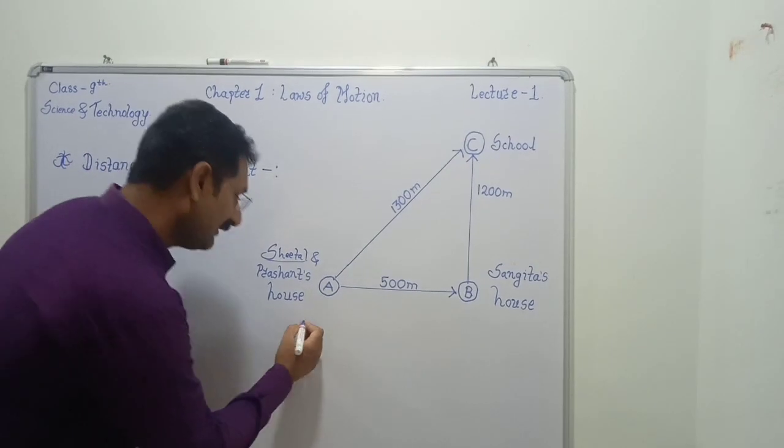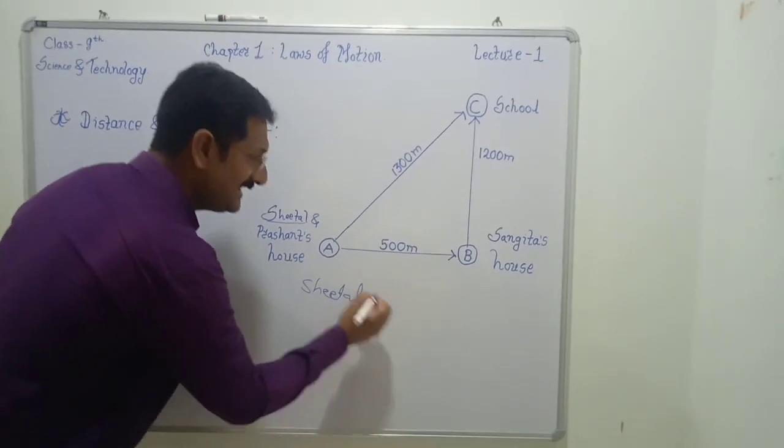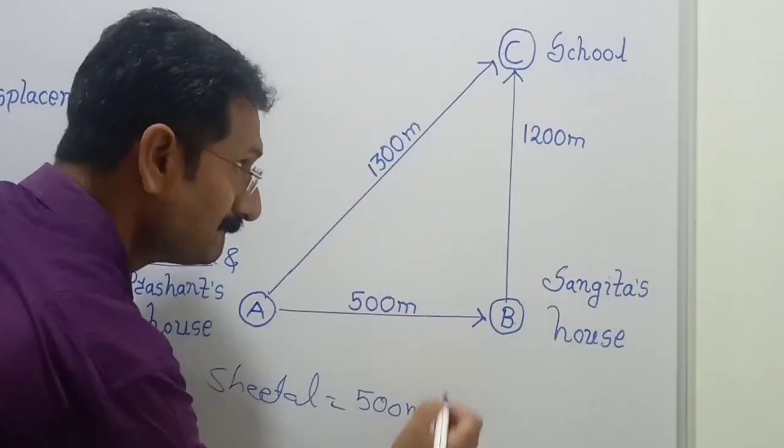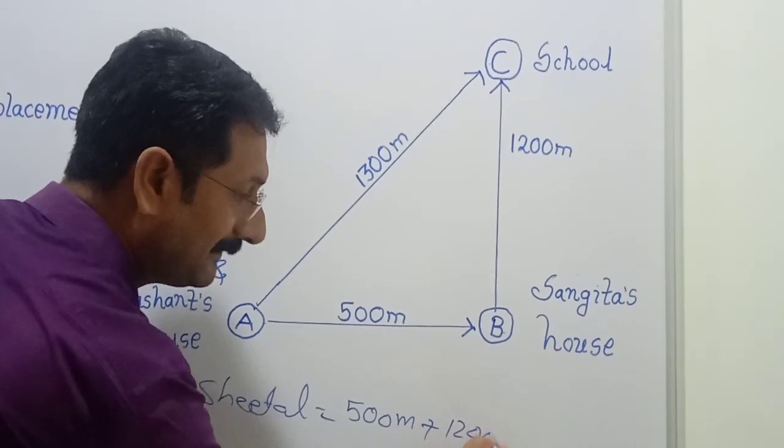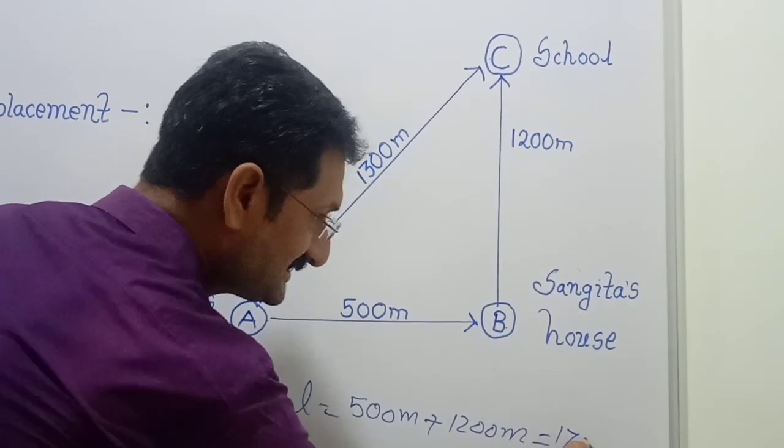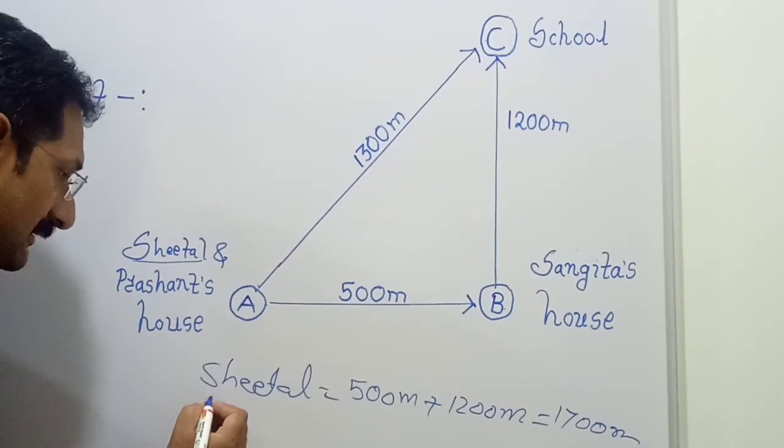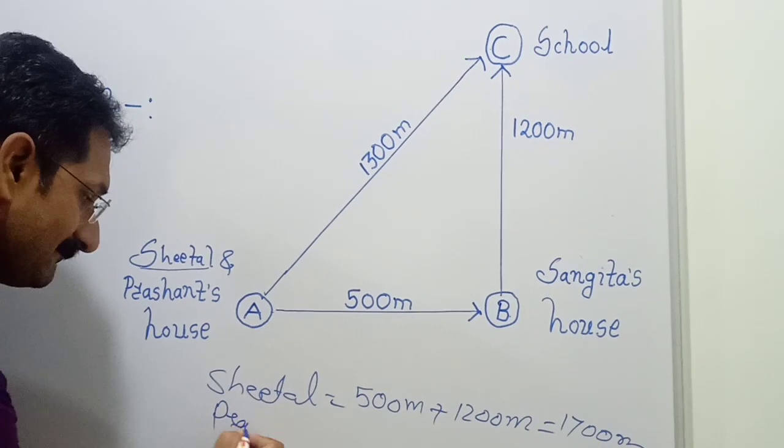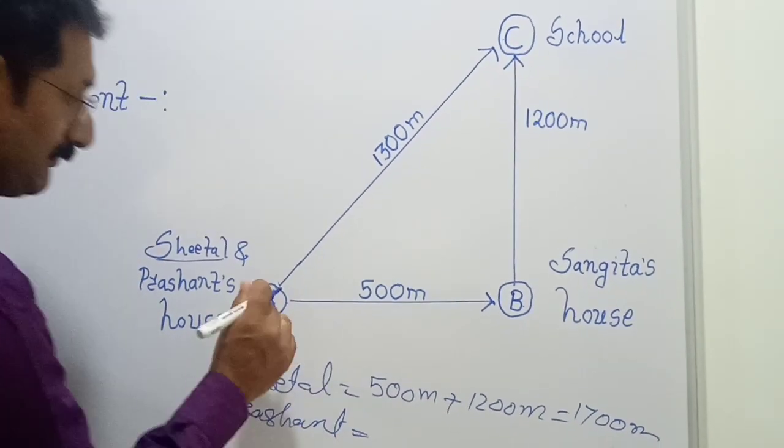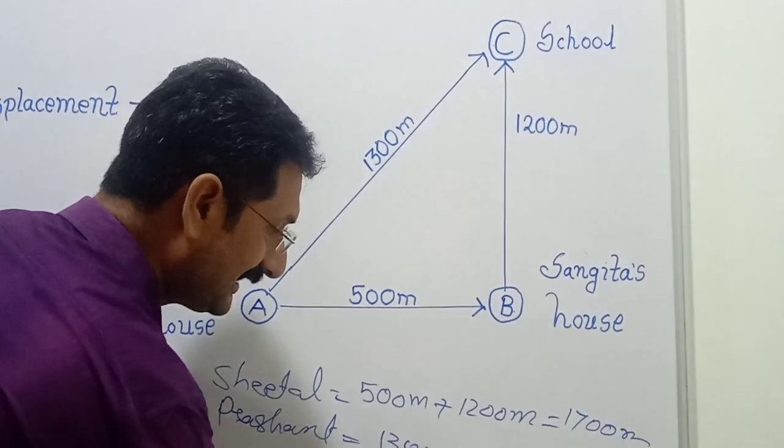she goes to school at point C. Here, the distance covered by Shital is 500 meter plus 1200 meter equals 1700 meter. But distance covered by Prashant is from A to C, that is 1300 meter.